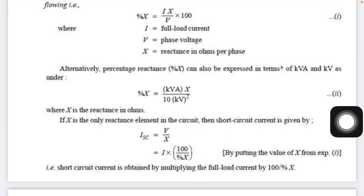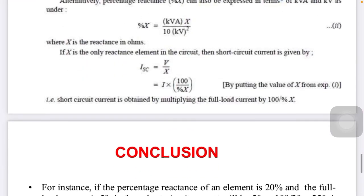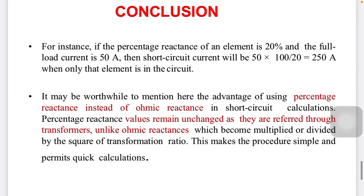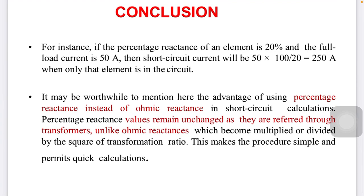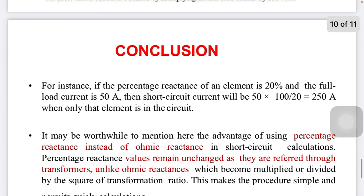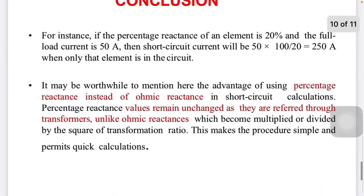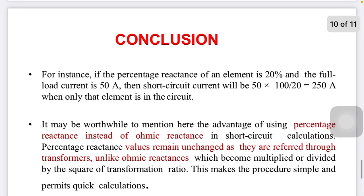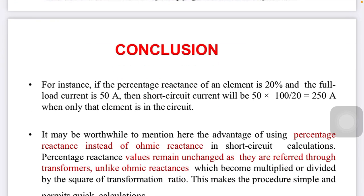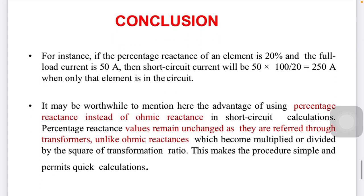So the short circuit current is obtained by multiplying the full load current by 100% divided by %X. For example, if the percentage reactance of the element is 20% and the full load current is 50 amperes, then the short circuit current is 50 × (100/20) = 250 amperes. From the next lecture, detailed examples of short circuit and different types of faults will be discussed.